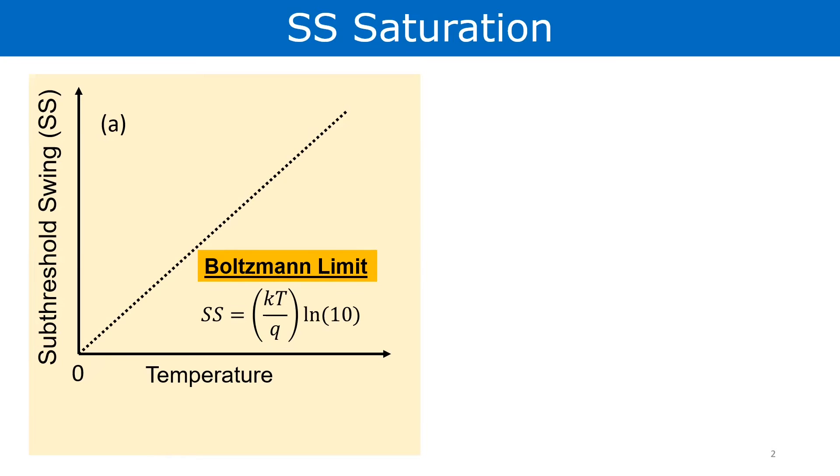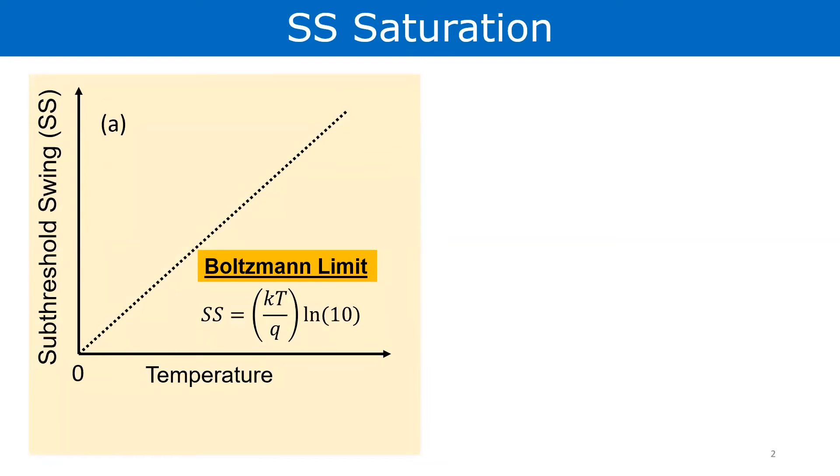Looking at this dotted line, it makes sense to cool the transistor to get a 0 millivolt per decade kind of subthreshold swing. However, experimental characterization of MOSFETs, FINFETs, nanowire FETs, etc. reveal that the subthreshold swing saturates with temperature as shown by the blue curve.